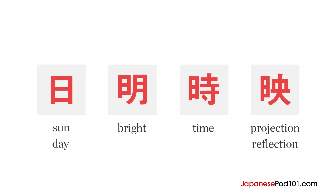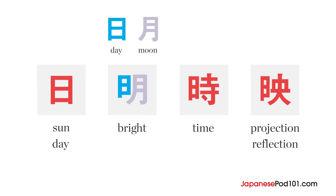The second kanji has the day radical on the left and the character for moon on the right. The sun and moon together depict daybreak, where the sky changes rapidly from night into day. And so the meaning of this character is bright.